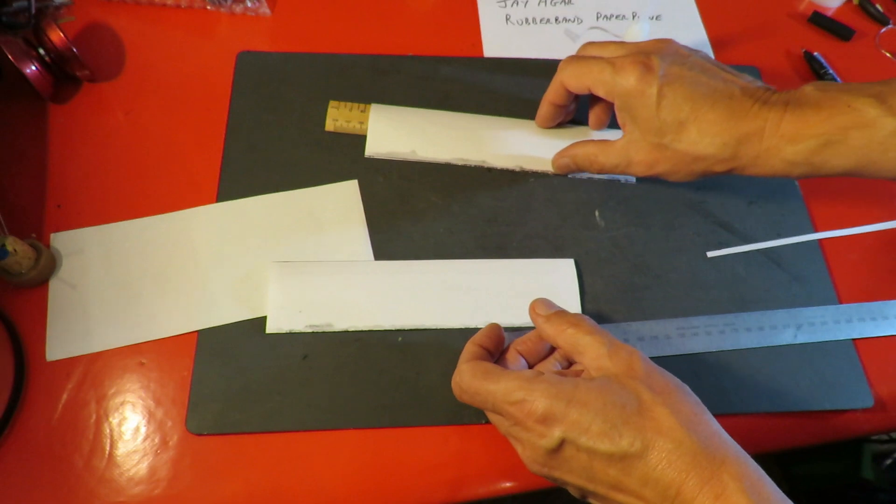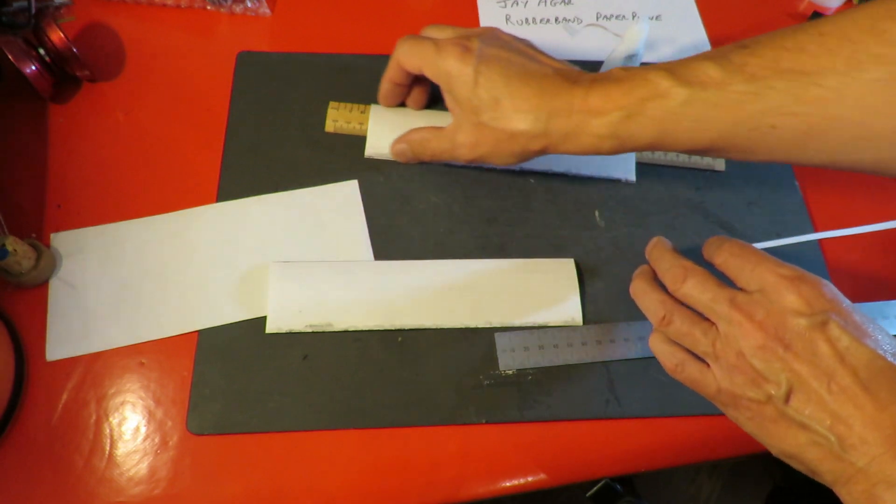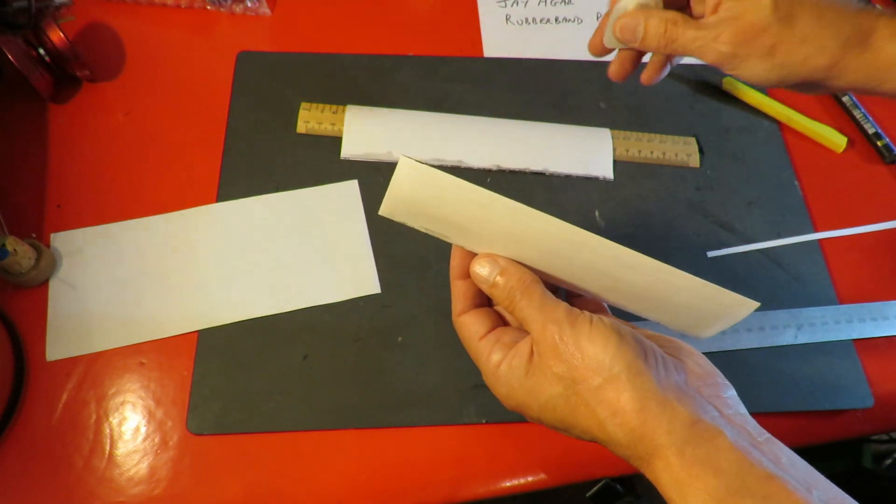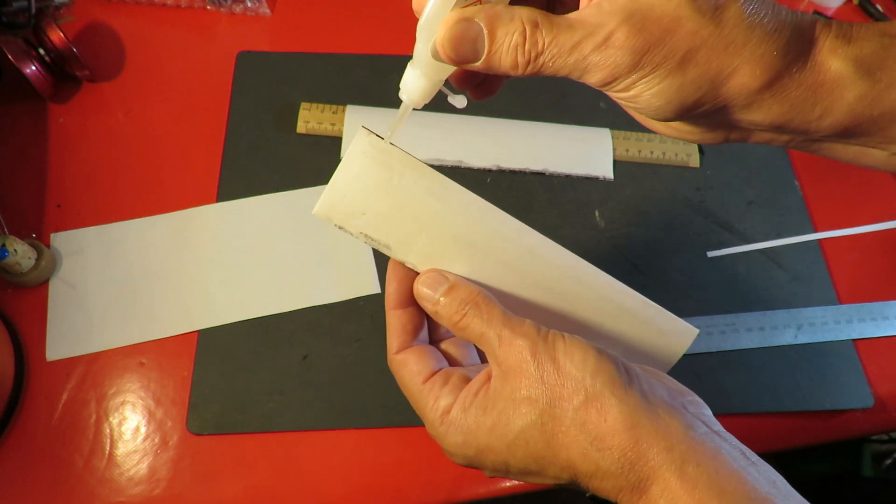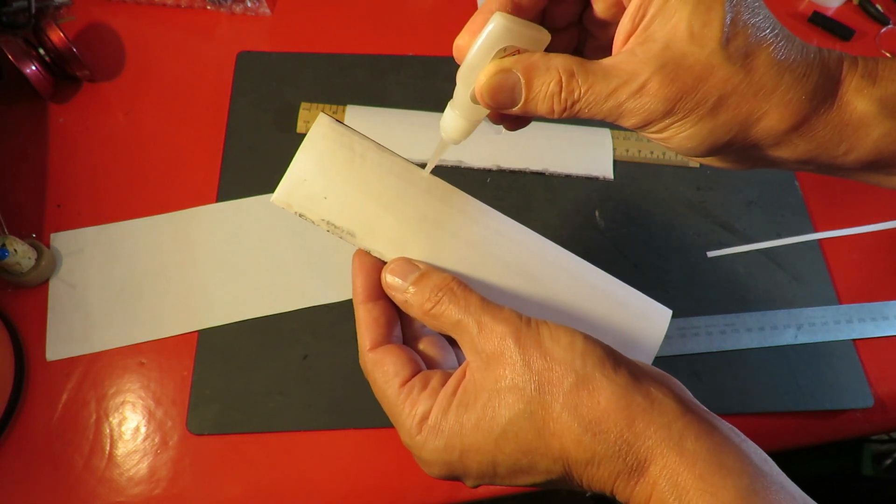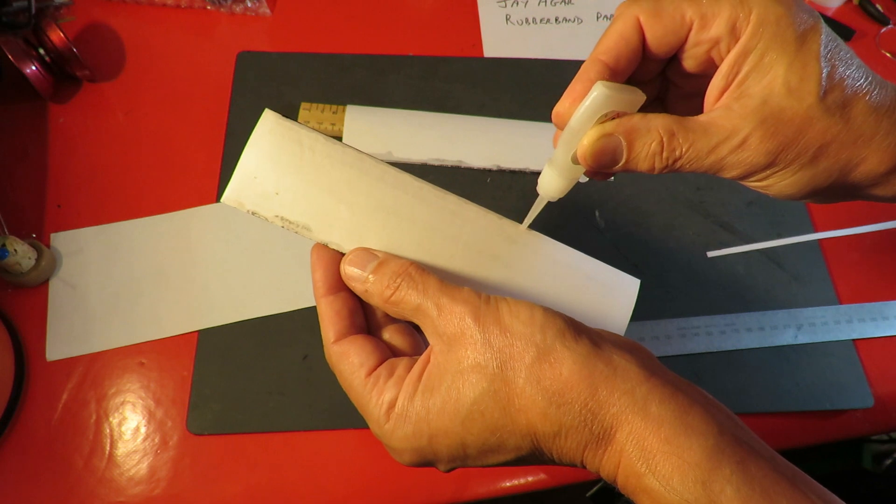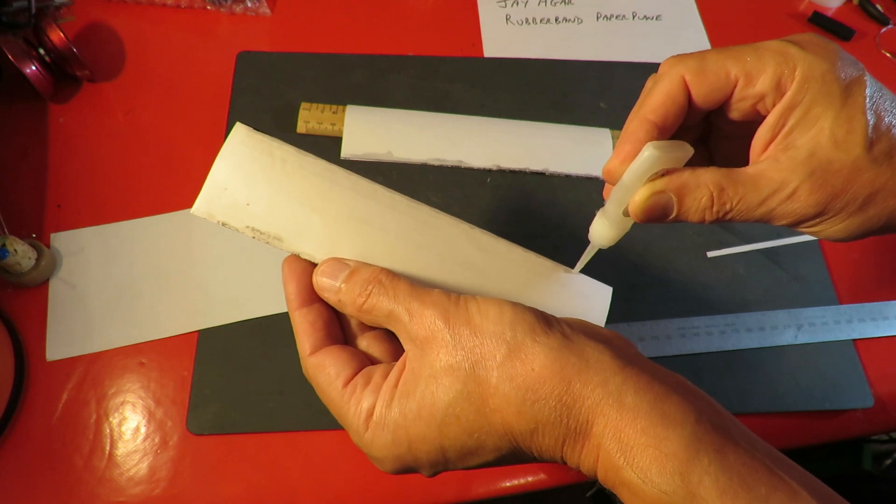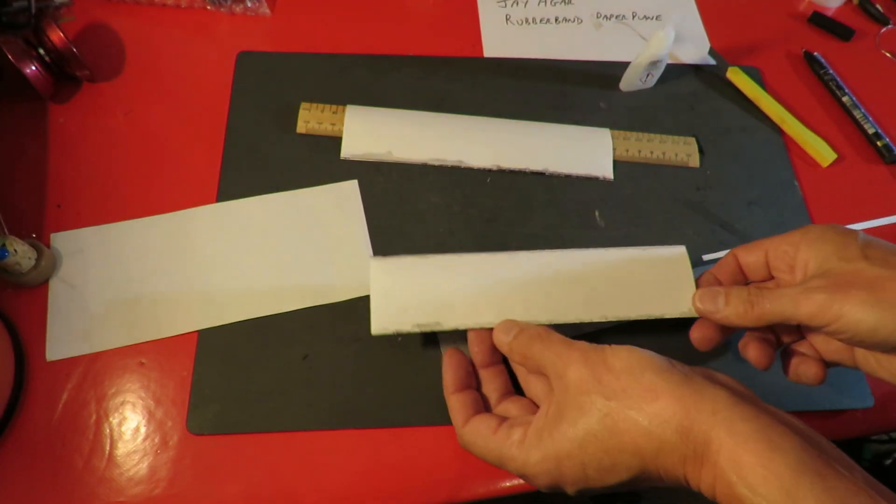So those two wings should be the same when they've dried. I'll just run superglue down the top edge or the leading edge. All right, I'll leave that to dry.